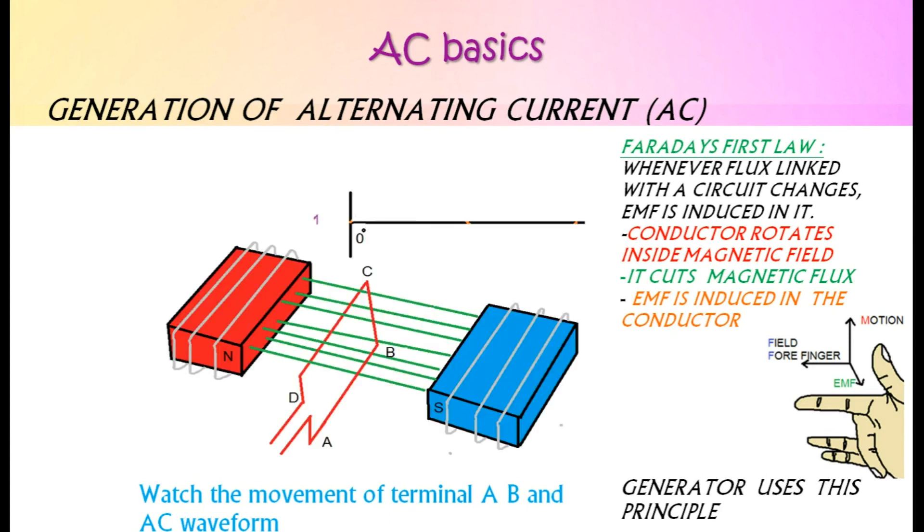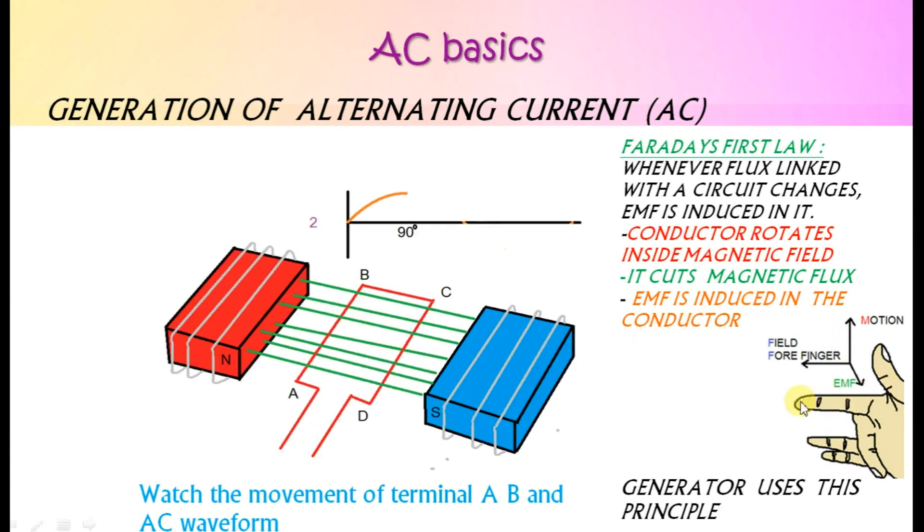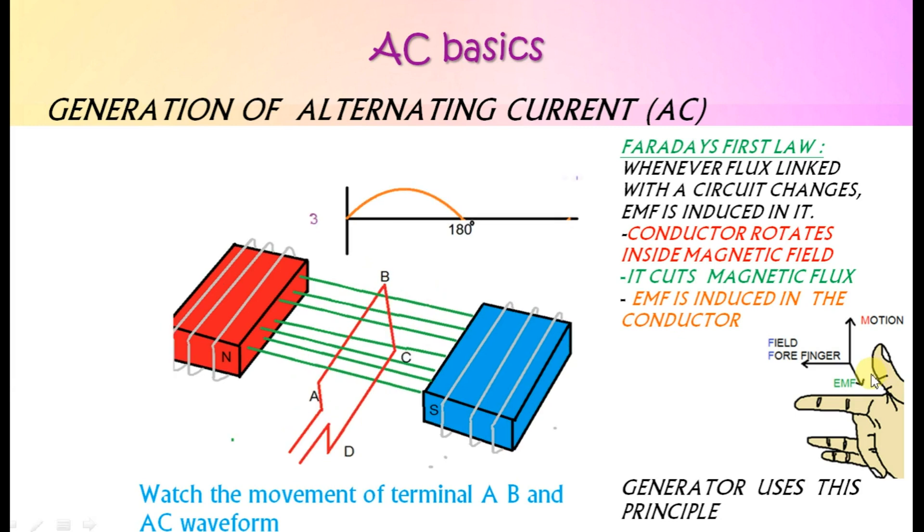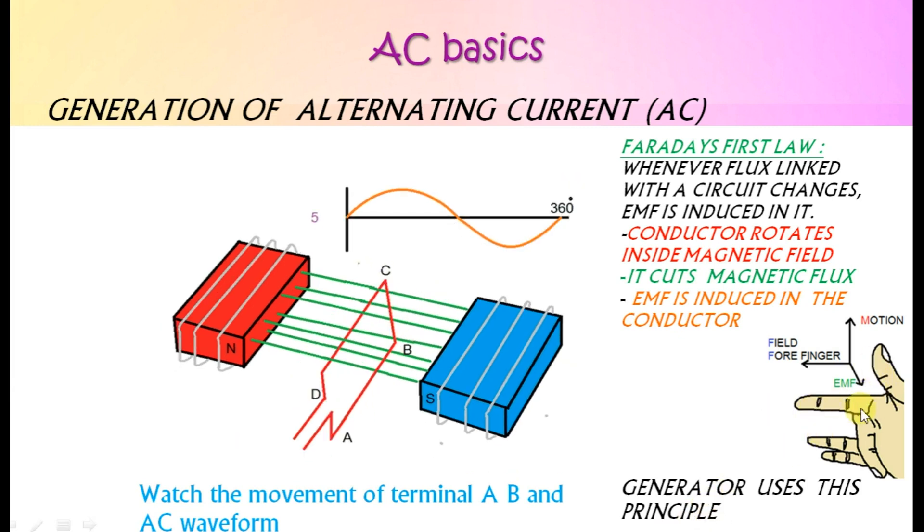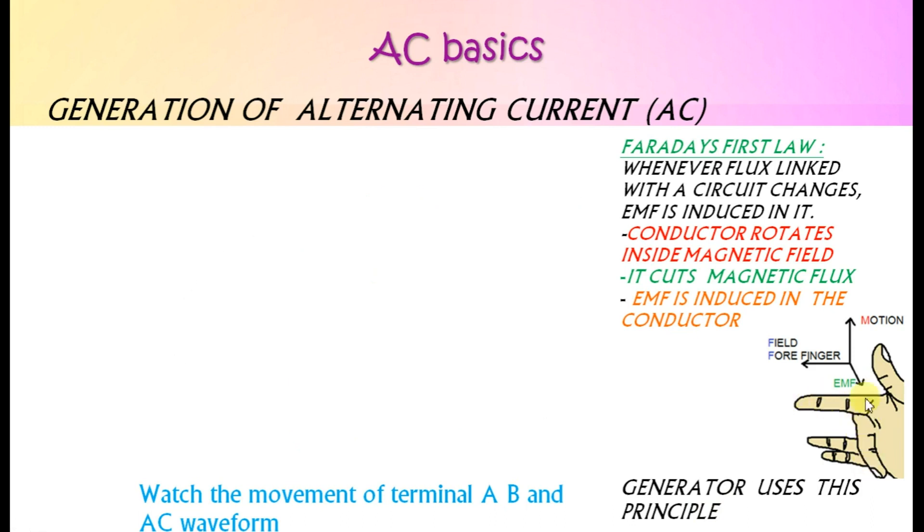It is also called the generator rule. Put thumb, forefinger, and middle finger in mutually perpendicular directions. If thumb represents force, then forefinger represents field and middle finger represents EMF. This law is used in electric generators.